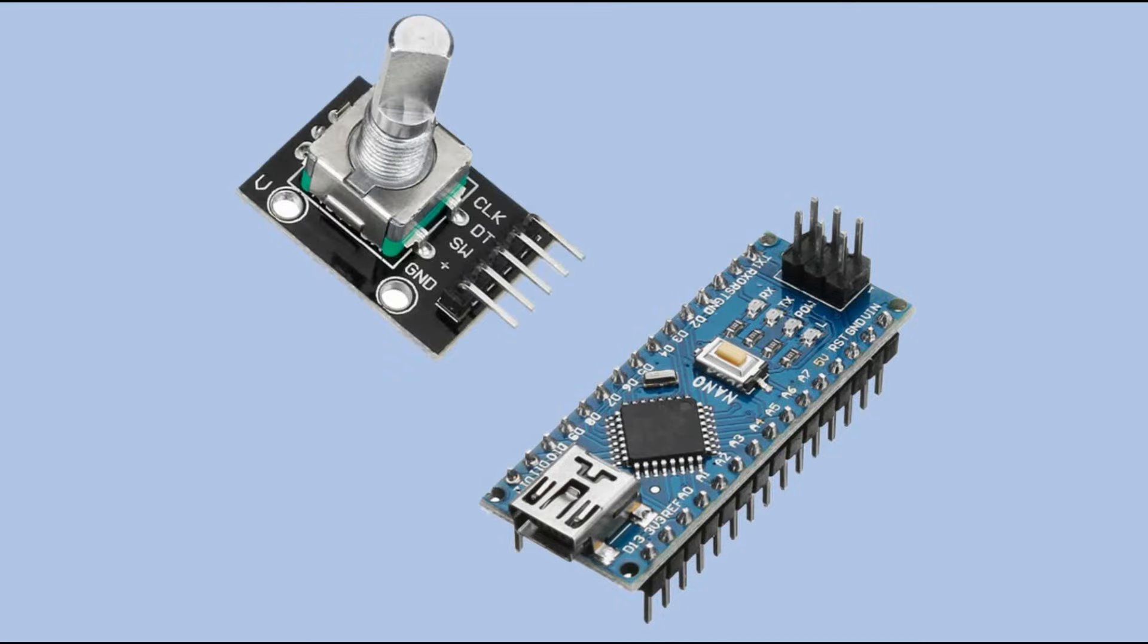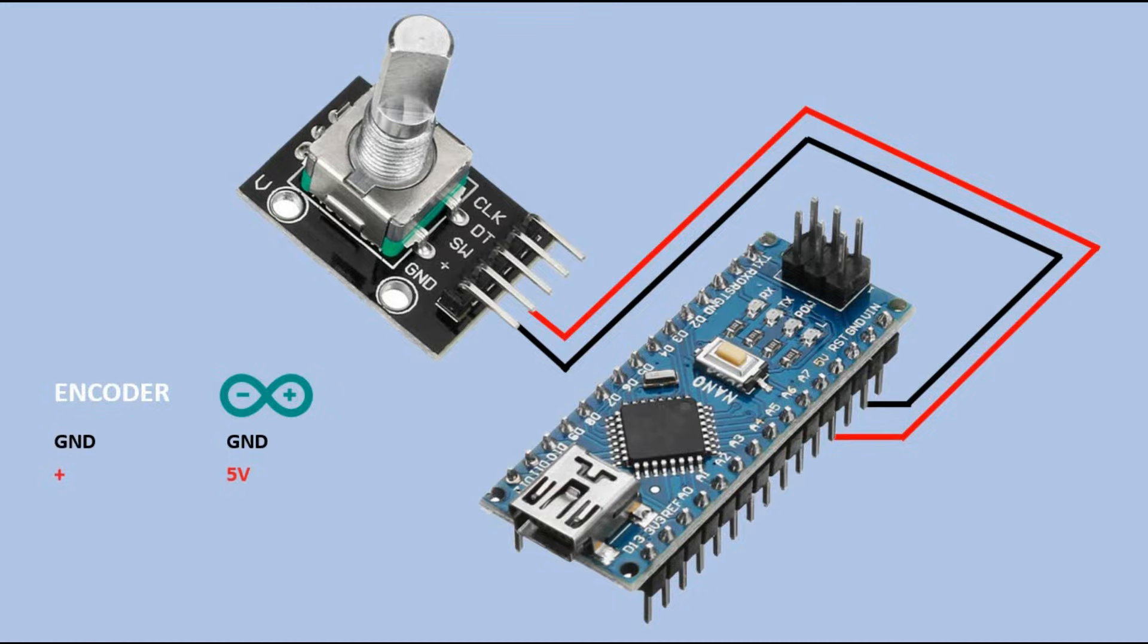So before we start writing the code to detect if the shaft is moved and in which direction, let's connect the encoder to Arduino first. Starting with connecting ground to ground and positive pin of an encoder to 5 volt pin of Arduino. Then we connect CLK pin to Arduino digital pin D3. This pin can be configured to trigger interrupts.